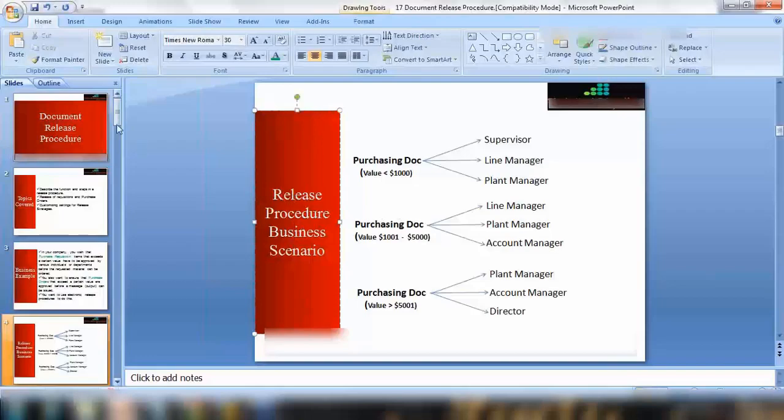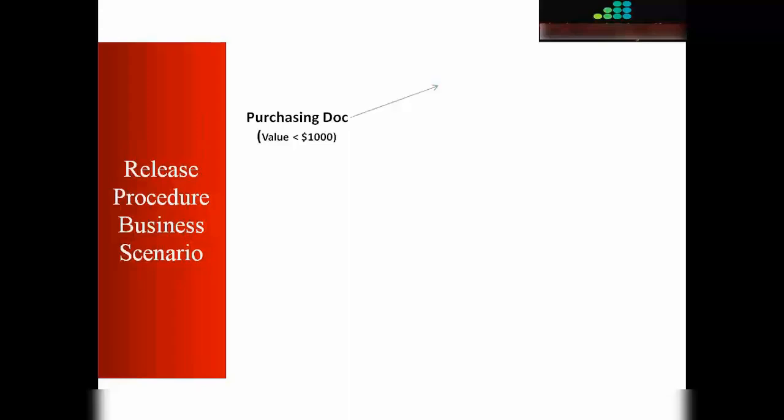Let's look at this same scenario in real-time terms. Suppose in my company the requirement is: if a purchase order value is less than one thousand dollars, it should first be approved by the supervisor on the shop floor, then by the line manager, and finally by the plant manager. That's one approval chain for document values less than one thousand dollars.